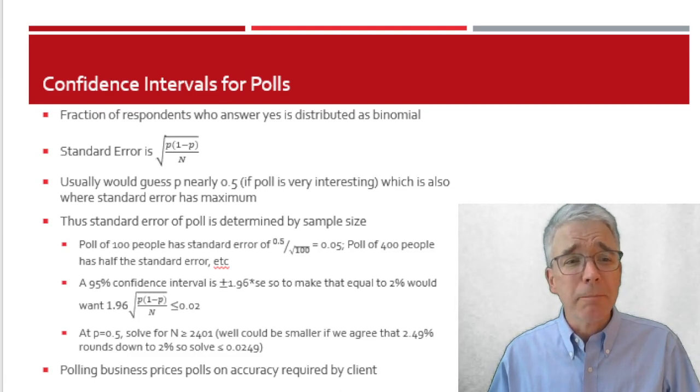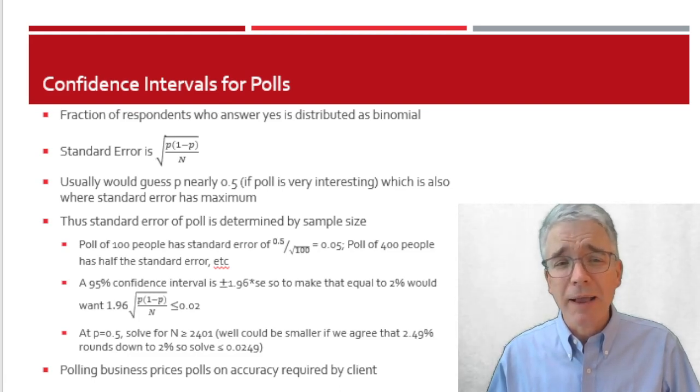If you're in the polling business, then your pricing is basically determined by how accurate the client wants the answer to be. The client wants a poll, then your basic question is, okay, how accurate do you need this to be? Do you want that plus or minus 2% or plus or minus 3% or plus or minus 1%?